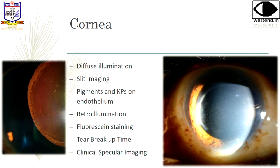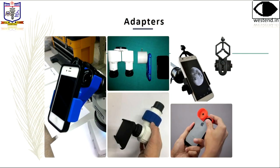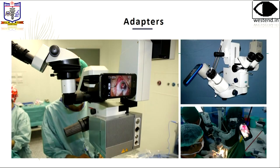On the cornea, you can take all types of photographs. You can do tear breakup time and specular photos with a smartphone. You can use adapters — I personally use one adapter, though for a simple photograph I just use the phone directly by hand without an adapter, only using the adapter for videos, gonioscopy, and 90D. It's also possible to fit a smartphone onto a surgical microscope observer scope, record surgeries, and review them at better quality than an expensive surgical microscope camera.